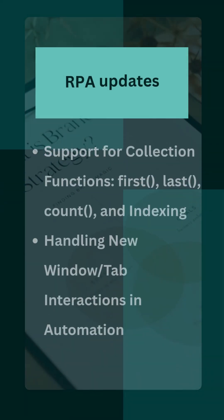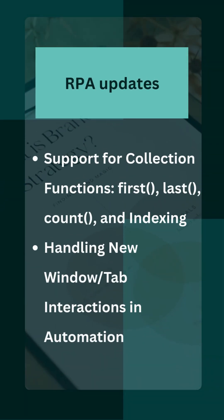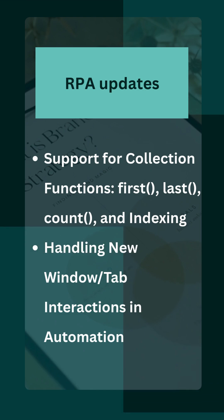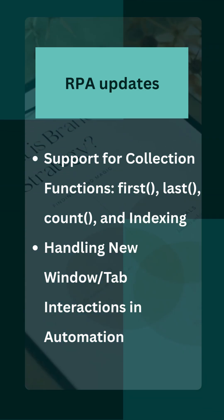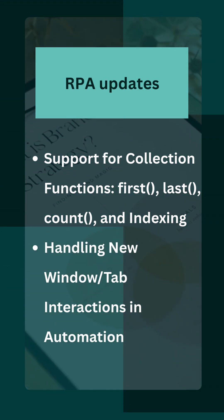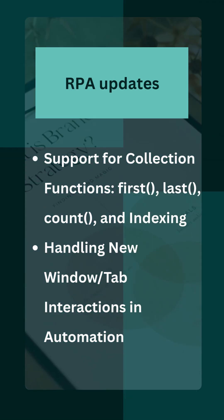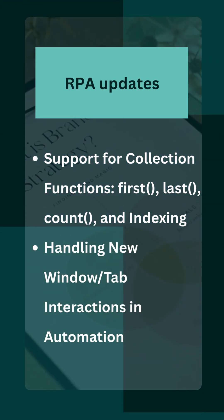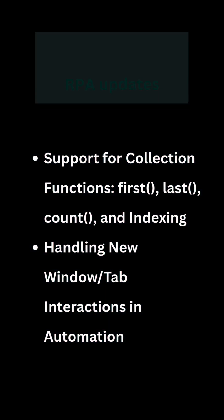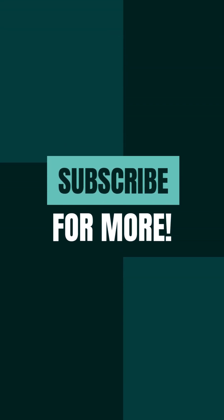RPA updates. First, support for collection functions: first, last, count, and indexing. Second, handling new window and tab interactions in automation.